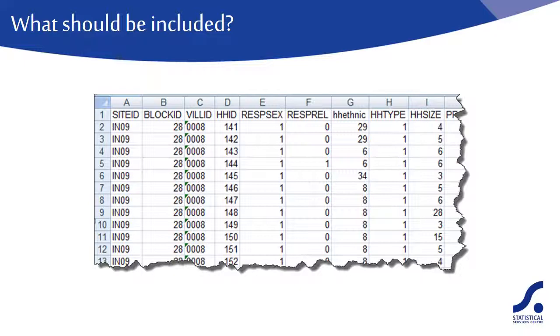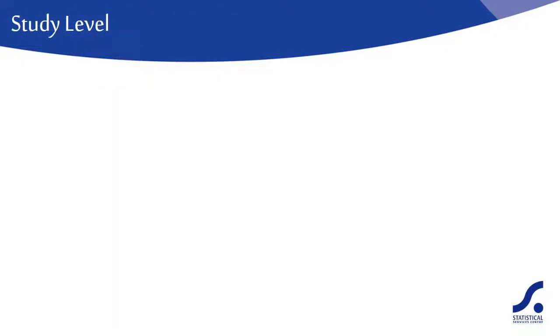Some of the questions are study level questions, so we would have one level of metadata to describe the study. We refer to this as the study catalogue, thinking in terms of what, when, where, who.